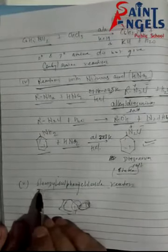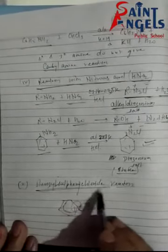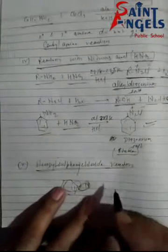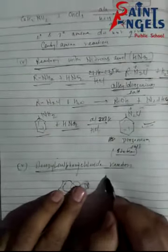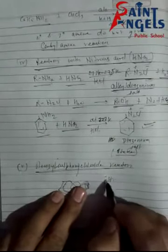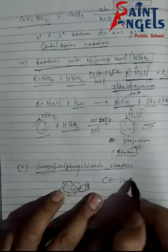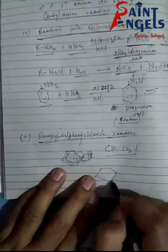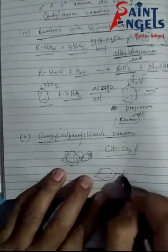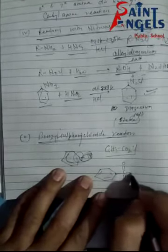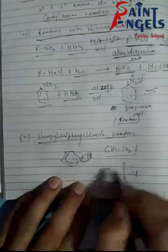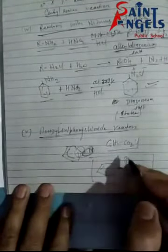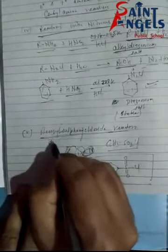Now the next property we will study is the reaction of amines with benzene sulfonyl chloride. Benzene sulfonyl chloride is a reagent. Its formula is C₆H₅SO₂Cl. Structurally it can be drawn as a benzene ring attached to SO₂Cl, with SO having two double bonds to oxygen and a Cl attached. This reagent is also called Hinsberg reagent.